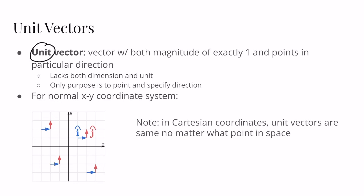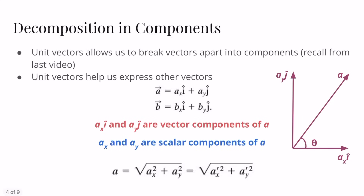For a normal xy coordinate system, as shown here in blue and red, we have two unit vectors: the i-hat unit vector — this symbol we call the hat symbol — and then in the y direction we have the j-hat unit vector. In Cartesian coordinates, unit vectors are the same no matter what point we are in space, so all of these unit vectors shown at different positions are identical.